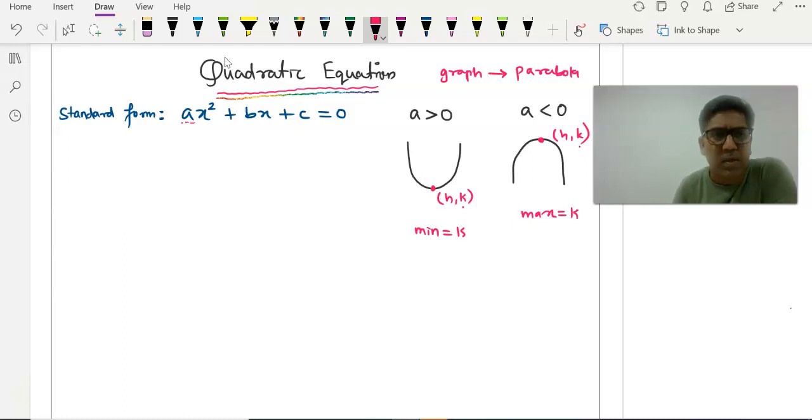To find the vertex from your standard form, we need to complete the squares. When we complete the square, the new form that we will get is known as the vertex form.